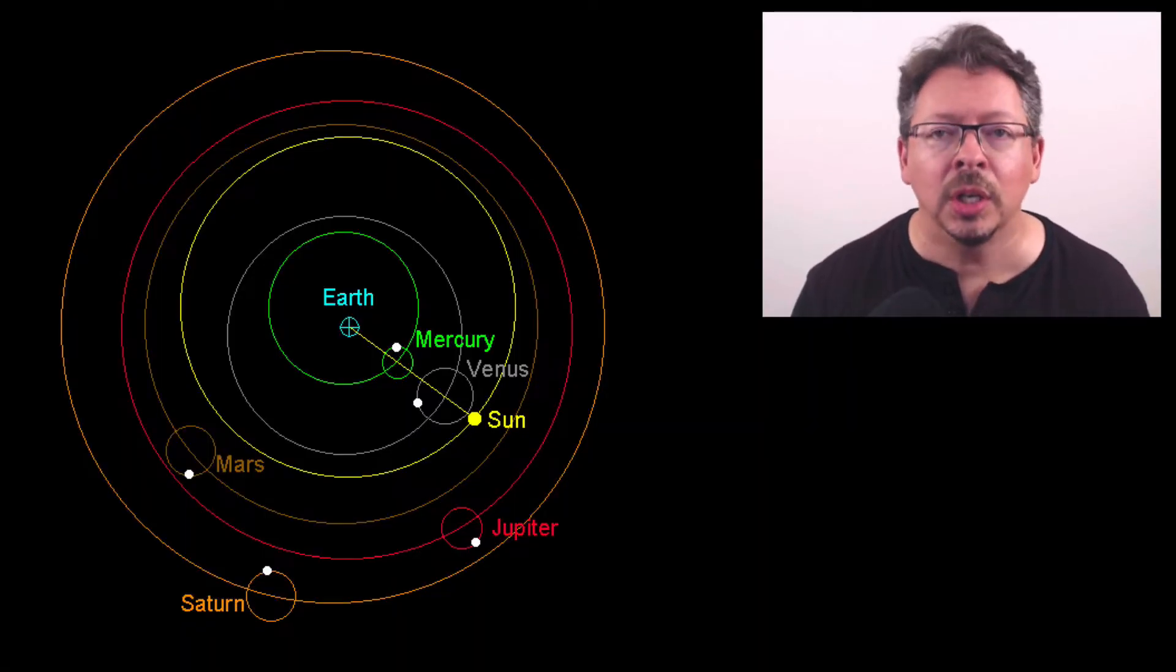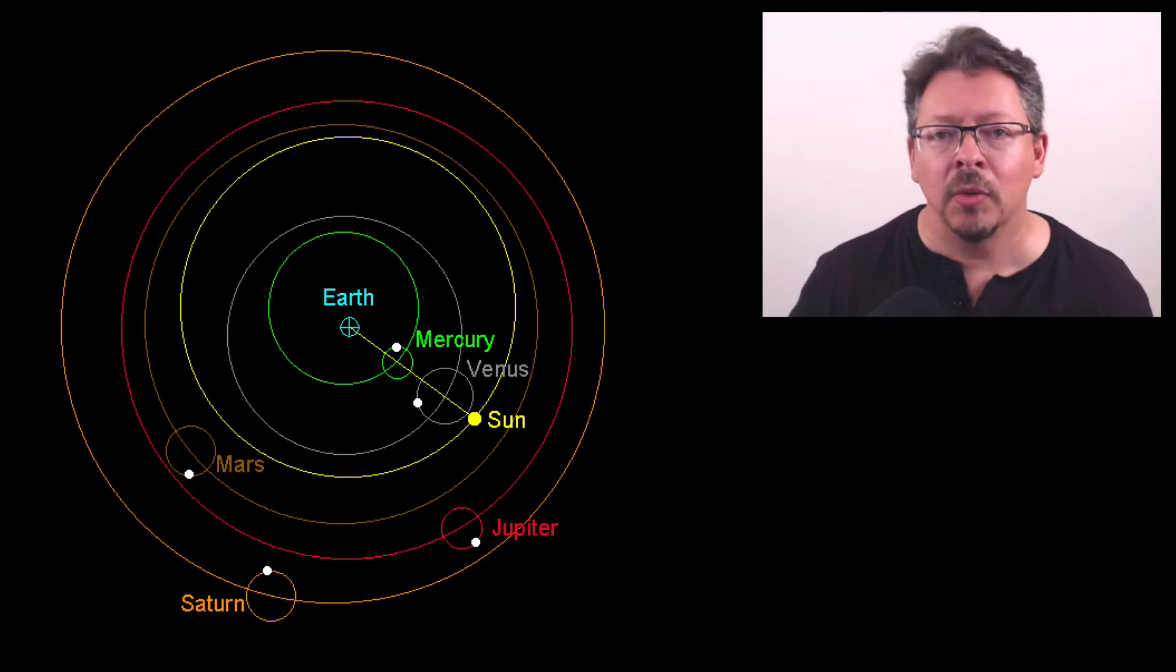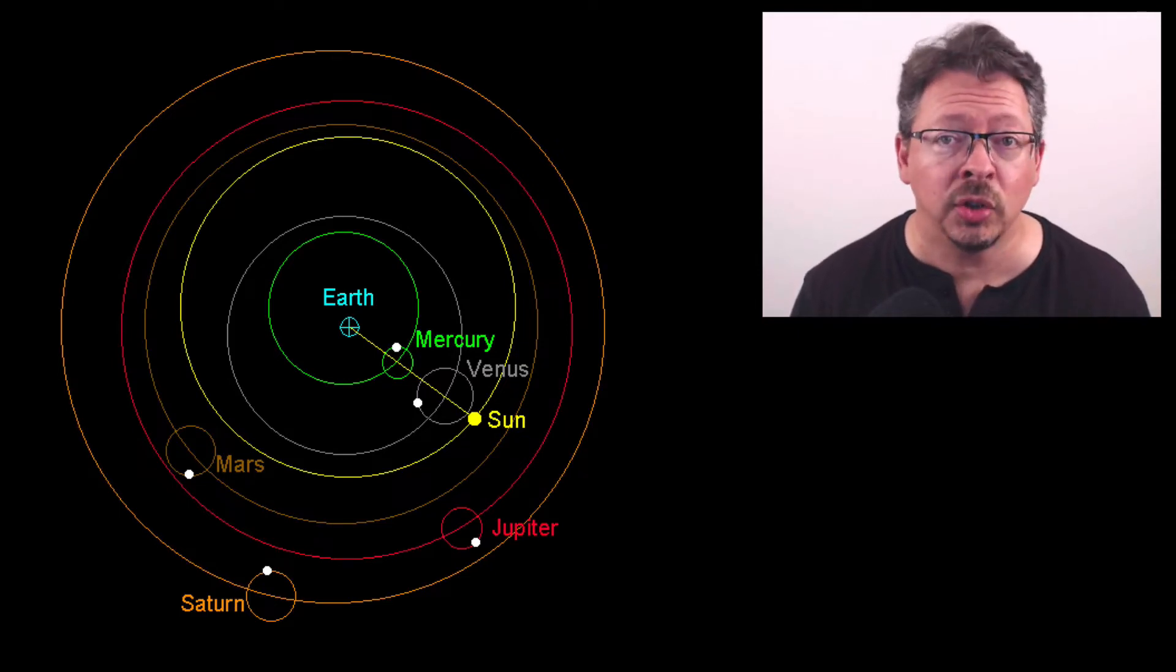You see the problem most clearly when we talk about theories that we used to believe are true, but that we no longer think are true. For example, in the 2nd century AD, the Roman mathematician Claudius Ptolemy came up with a theory of the cosmos that was widely accepted until the 16th century.